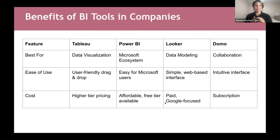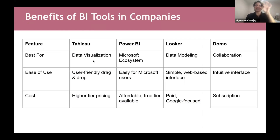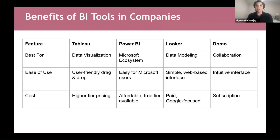Here's a matrix of the benefits of BI tools. At the top you've got Tableau, Power BI, Looker, and Domo. Tableau is a really big contender for data visualization — really powerful. Power BI is great if you're in the Microsoft ecosystem. Looker is good for data modeling — you take your data and design tables exactly how you want. And the word on the street is Domo is the best for collaboration and sharing across departments.